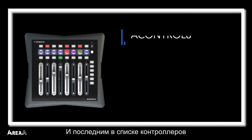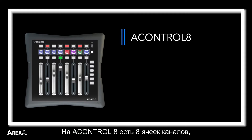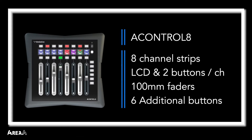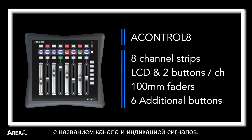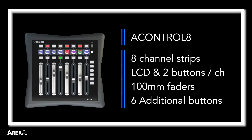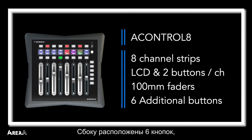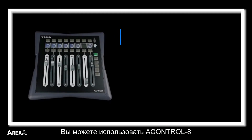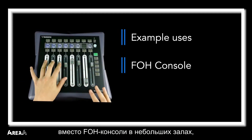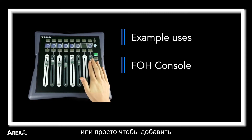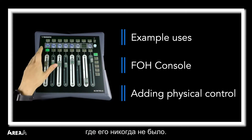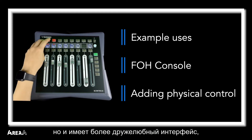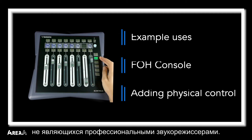To finish off the list of available controllers, we have the A-Control 8. The A-Control 8 has eight channel-like strips, each with an LCD to show channel name and metering, two buttons — maybe a solo and a mute — plus a 100mm fader as seen on our consoles. There are also six buttons down the side that could be set to control banks, firing snapshots, GPO MIDI, tap tempo, or a host of other controls. You could use an A-Control 8 as a replacement for a front of house console surface in smaller venues, or for simply adding physical control where you may not have had it before. This not only saves space but is a much less daunting interface for people who are not professional sound engineers.